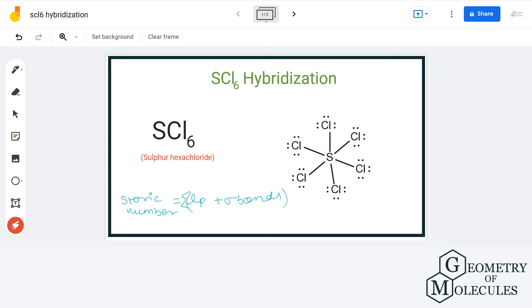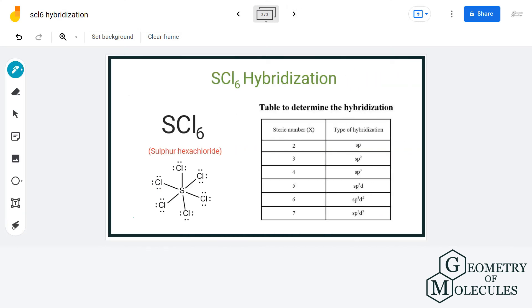Let us add the two. We have 6 sigma bonds plus 0 lone pairs which equals the steric number of 6, which corresponds to the SP3D2 hybridization.